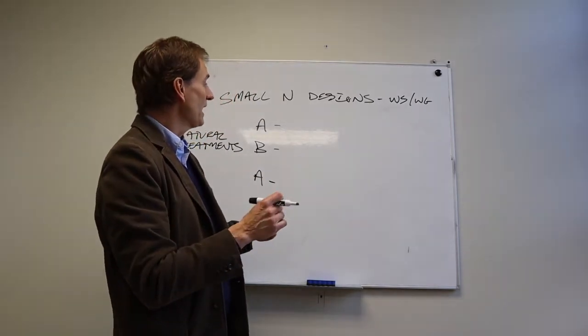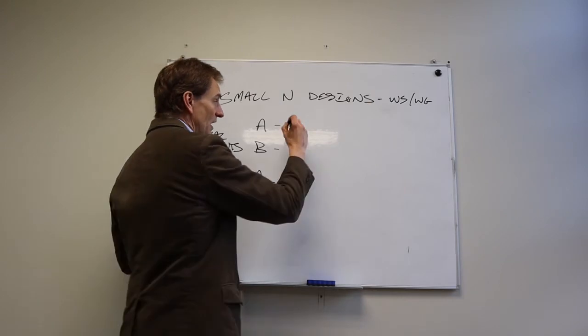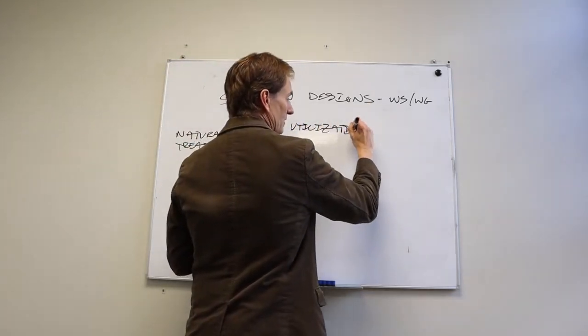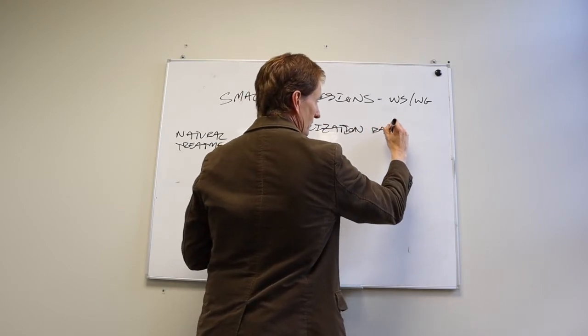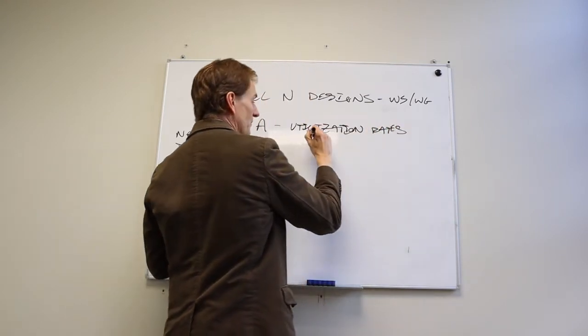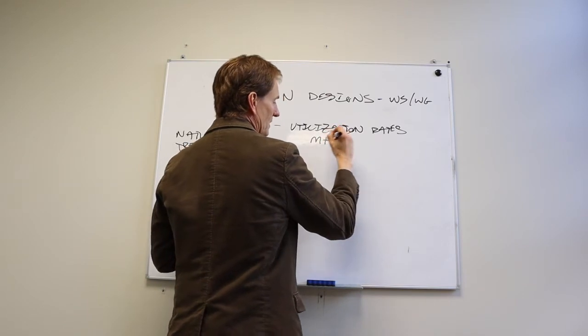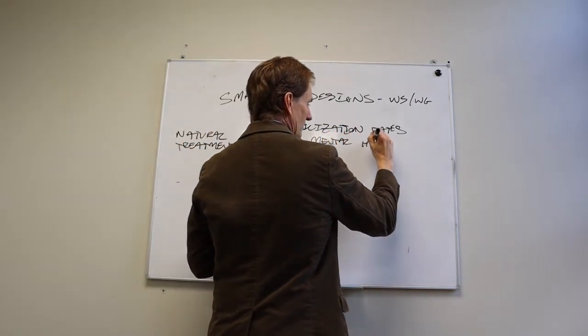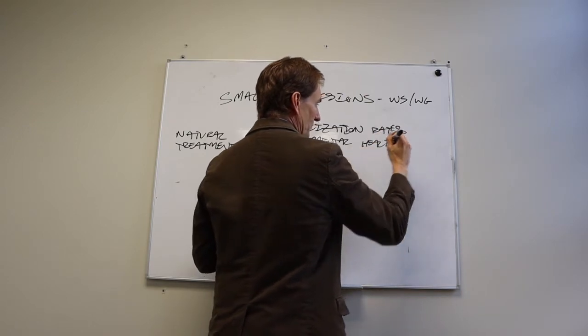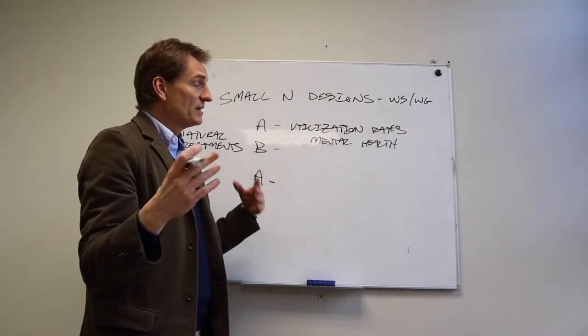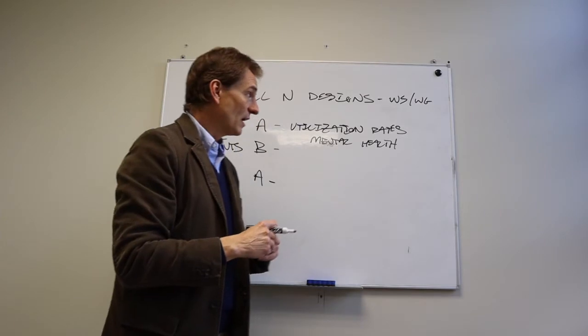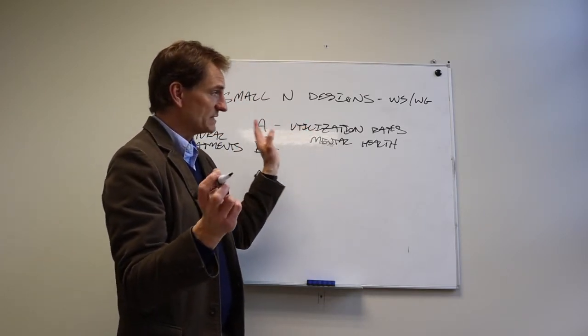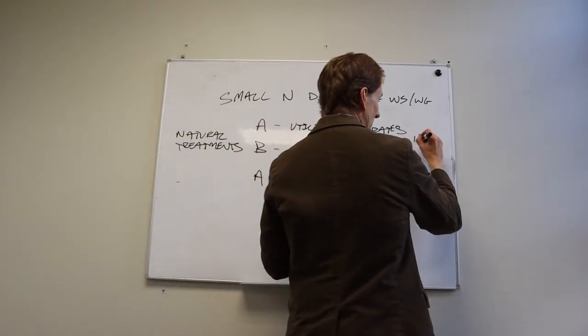So you could look at utilization rates of mental health care. Because there's community mental health. And so people come in when they're going through difficult times. So let's say there's a hundred clients per month on average, and then the B is the flood.